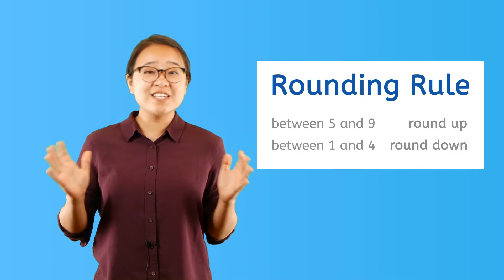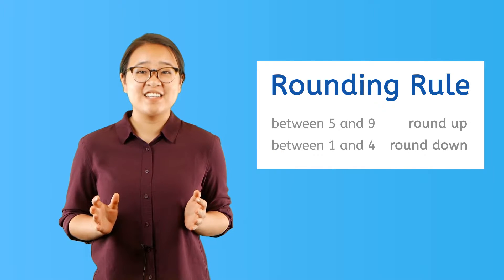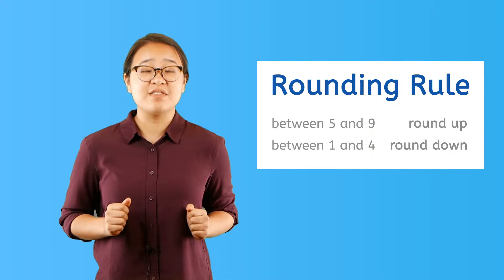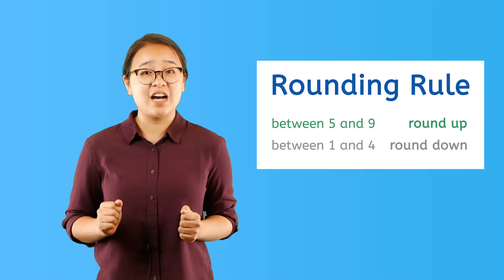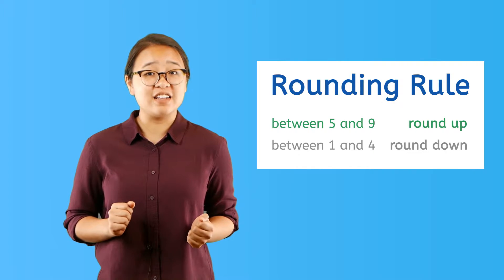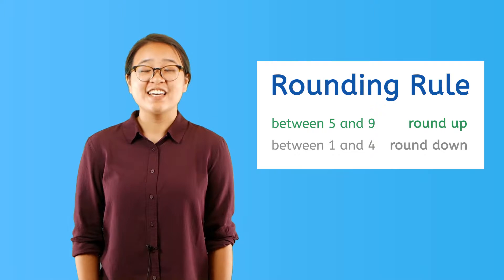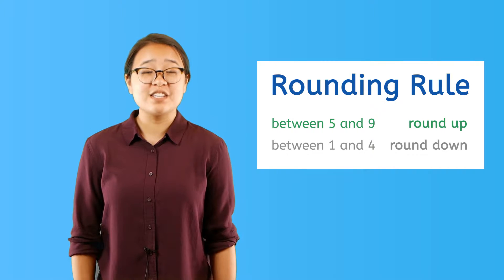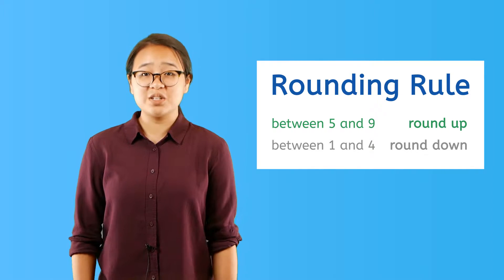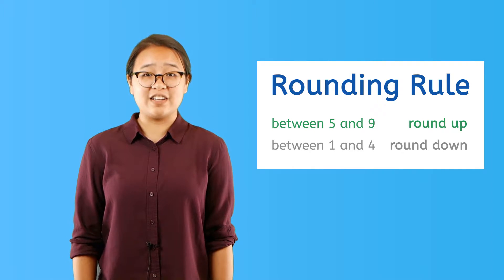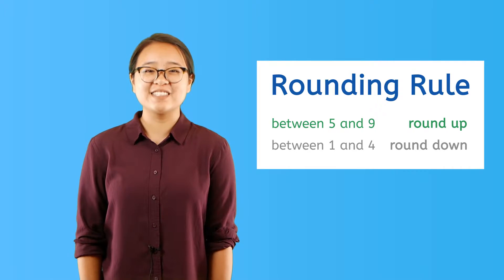There's a pretty simple rule for rounding. If the digit to the right of a given place value is between 5 and 9, you round up. This means the number in a given place is increased by 1 if the digit to its right is 5 or more.